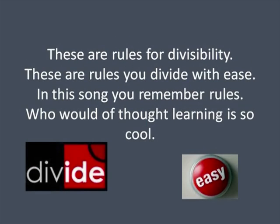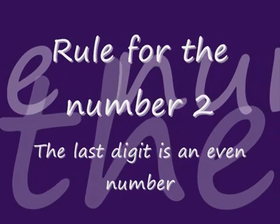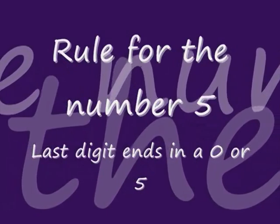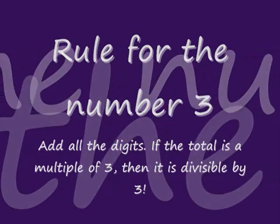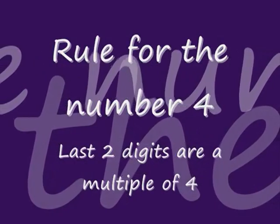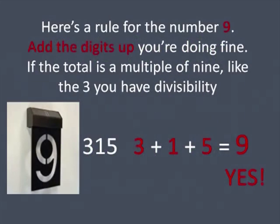These are rules for divisibility. These are rules you divide with ease. In this song you remember rules. Buddha thought learning is so cool. Here's a rule for the number nine. Add the digits up, you're doing fine. If the total is a multiple of nine, like the three, you have divisibility.